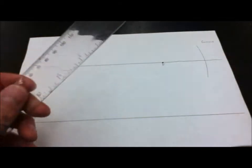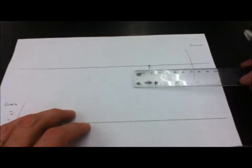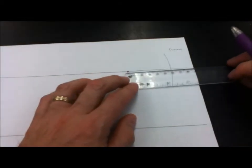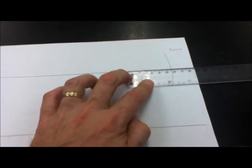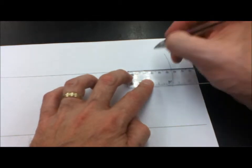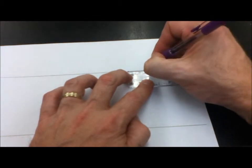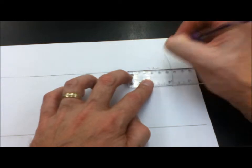We're going to use a ruler now to figure out exactly where the center of curvature is. If we measure the distance from F to the vertex, you can see here we get a measurement of about 5.2 centimeters. Now the center of curvature is twice that.